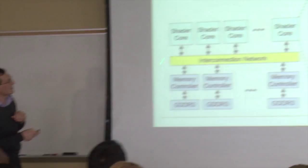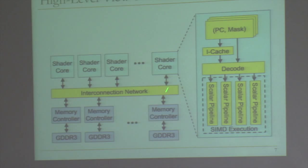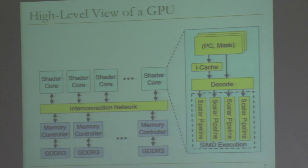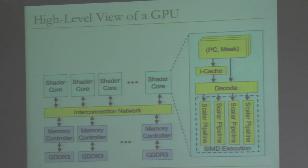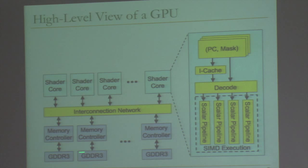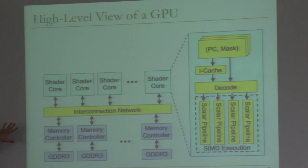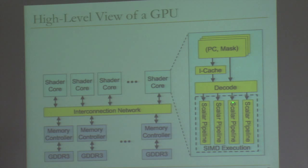I won't cover the entire GPU — we could have many lectures on GPUs. At a high level, a GPU has a bunch of cores, sometimes called a shared shader core or streaming multiprocessor in NVIDIA's terminology. These cores have caches, are connected to an interconnection network, and connected to memory controllers and graphics memory. Looking at the cores, there are special purpose units for graphics-related processing like texture processing or frame caches, but we'll focus on the general purpose core.